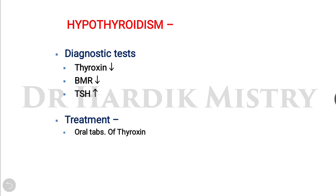Diagnostic tests for hypothyroidism show decreased thyroxine level and increased TSH level. BMR is decreased because thyroid hormone normally increases BMR, so its deficiency reduces BMR. Treatment includes oral tablets of thyroxine.